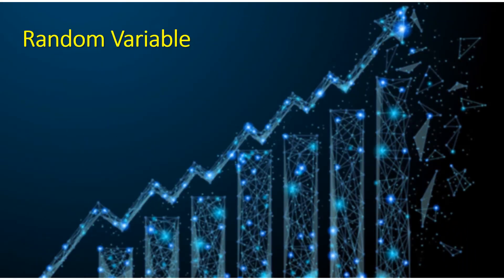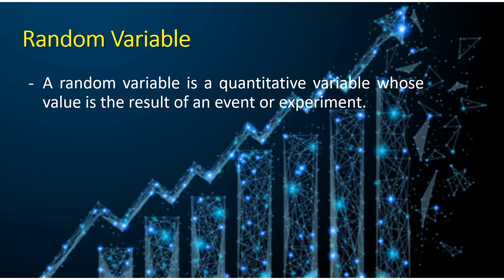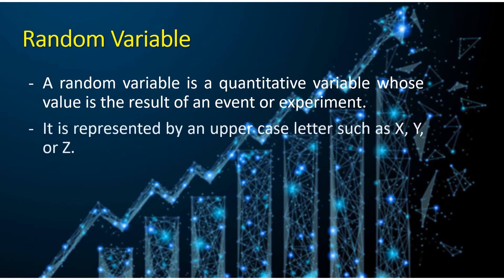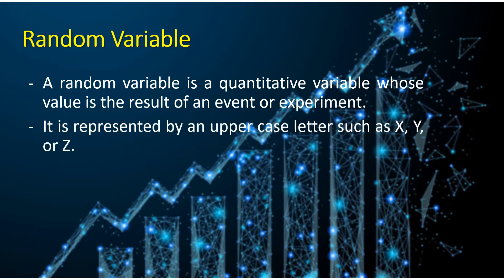So, let us first define what is a random variable. A random variable is a quantitative variable whose value is the result of an event or experiment. It is represented by an uppercase letter such as capital X, Y, or Z.